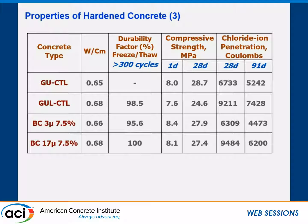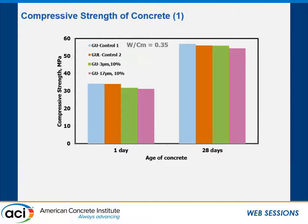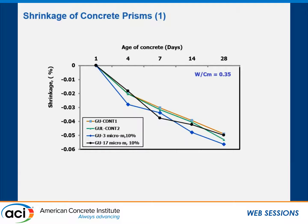Freeze-thaw durability tests: every one of the mixes passed — not a surprise when they were all air-entrained with good spacing factor. Compressive strength and Coulomb chloride ion permeability are again very similar at 0.65 water-to-cement ratio. The GUL showed slightly lower strength in this case, but everything else is within about 1 MPa.